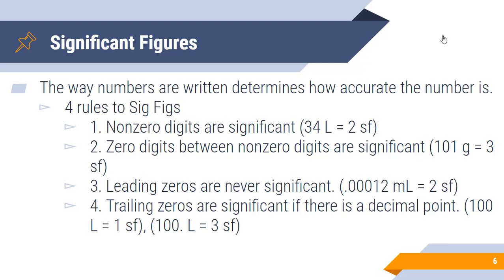And lastly, trailing zeros are significant if there is a decimal point. So 100 liters with no decimal point only has one significant figure. The trailing zeros are not significant because there is no decimal point. However, if we place a decimal at the end of 100, then that becomes three significant figures. 100 without the decimal point is kind of an estimation, somewhere near 100. But 100 with a decimal point says that that number is exactly 100, no more, no less.